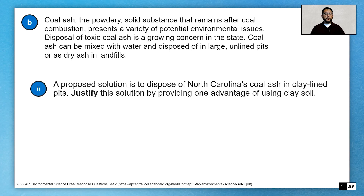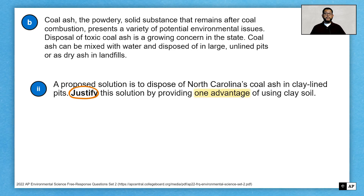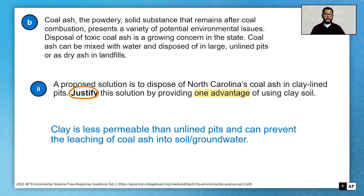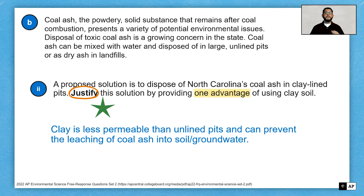Letter B2 asks us: a proposed solution is to put the coal ash in clay-lined pits. This introduces a new command: 'justify.' They've given you an actual solution, and you have to use your own knowledge or evidence from the text to say how this could be helpful — give an advantage and defend it. You can say that clay is less permeable than unlined pits, and it can prevent the leaching of coal ash into the soil and the groundwater. Make sure you understand what 'justify' means versus 'make a claim,' which is where you have to take a stand yourself.